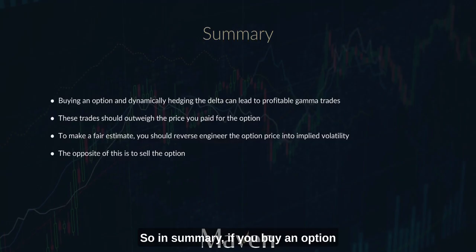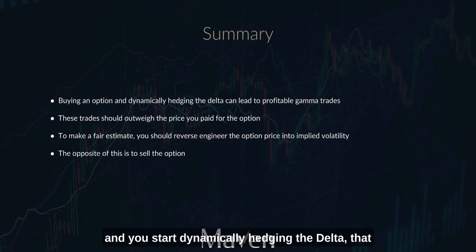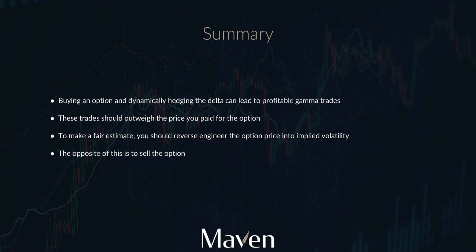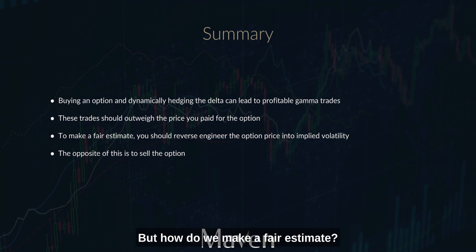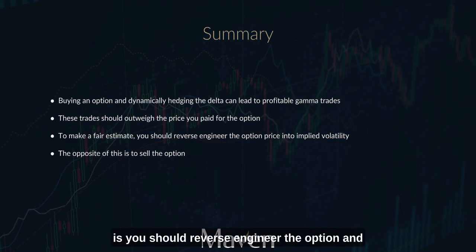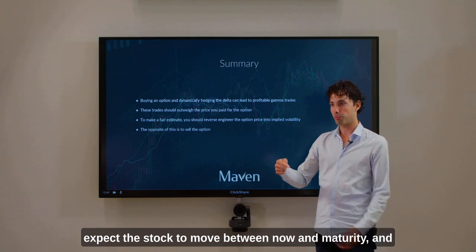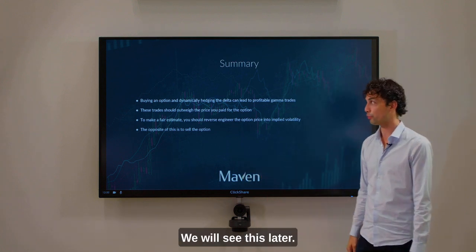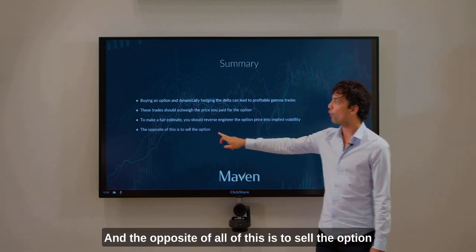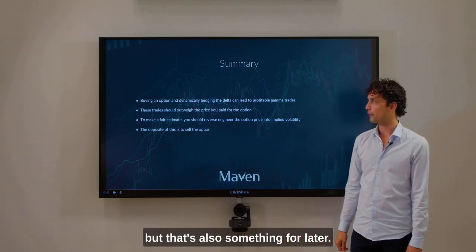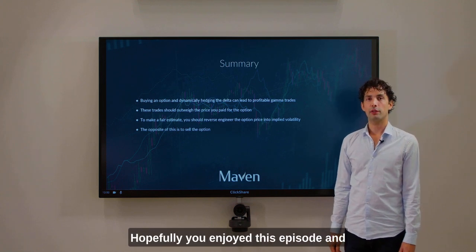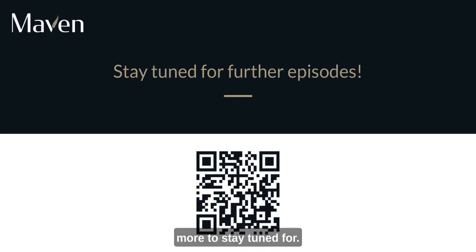In summary, if you buy an option and start dynamically hedging the delta, that can lead to profitable gamma trades. These trades have to outweigh the price you paid up front. To make a fair estimate, you should reverse-engineer the option and extract the implied volatility. The implied volatility will tell you how much the stock is expected to move between now and maturity, and then you can make a call on it. The opposite of all of this — selling the option — is also something for a later episode. Hopefully you enjoyed this episode, and stay tuned for more.